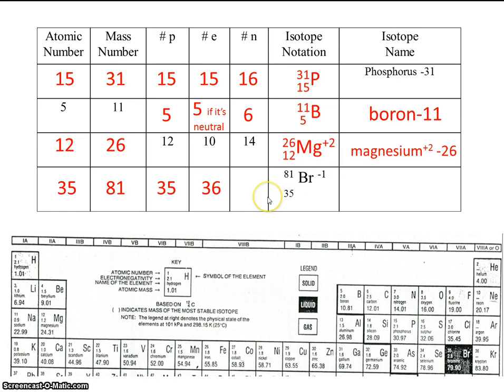So if the mass number again is 81, the number of protons plus the number of neutrons has to equal 81. So 35 plus 46 should equal 81. And we would write this as bromine-81 or even bromide-81.